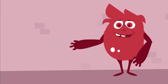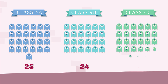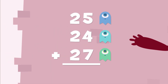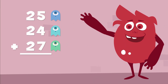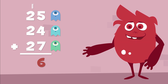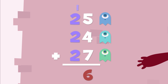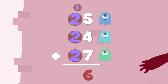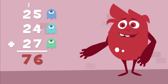In each class: in 4A there are 25 monsters, in 4B there are 24 monsters, and in 4C there are 27 monsters. Let's look at the total. First, we add the numbers in the units column: 5 plus 4 is 9, 9 plus 7 is 16. We put the 6 down here and carry the 1 to the tens column. Now we add up the tens column — don't forget the 1 we carried: 1 plus 2 is 3, 3 plus 2 is 5, and 5 plus 2 is 7. There are 76 monsters total.